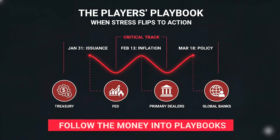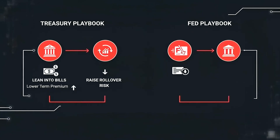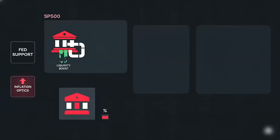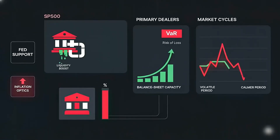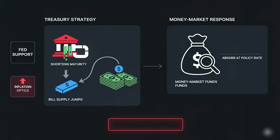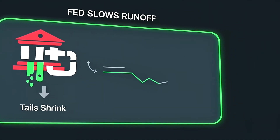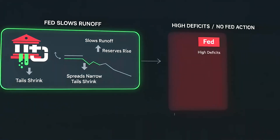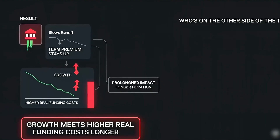Follow the money into playbooks. Treasury can lean into bills to ease long supply — that lowers term premium but raises rollover risk. The Fed can slow balance sheet runoff to add reserves — that supports liquidity but risks inflation optics. Primary dealers can raise balance sheet capacity — that carries VAR risk on price swings into calmer periods. Every move shifts pressure, not erases it. If Treasury shortens, bill supply jumps and money market funds absorb at near policy rate. If the Fed slows runoff, reserves rise, funding spreads narrow, and tails shrink. If neither happens and deficits stay high, investors demand more compensation for time. Term premium stays up. The result: growth meets higher real funding costs longer.